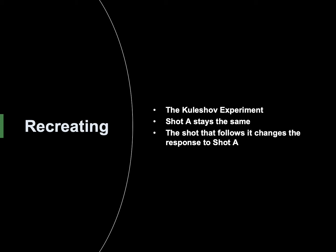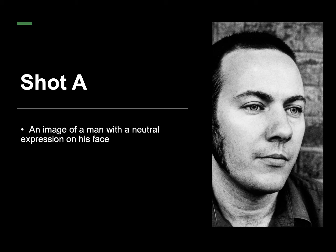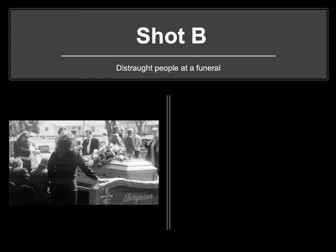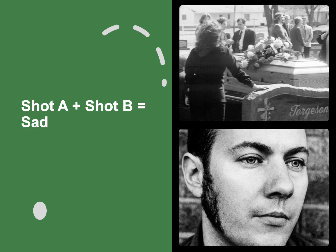Recreating the Kuleshov Experiment: Shot A stays the same, while the shot that follows changes the response to Shot A. Shot A is a shot of a man with a neutral expression on his face. Joined with Shot B — a picture of distraught people at a funeral — Shot A plus Shot B equals sad.